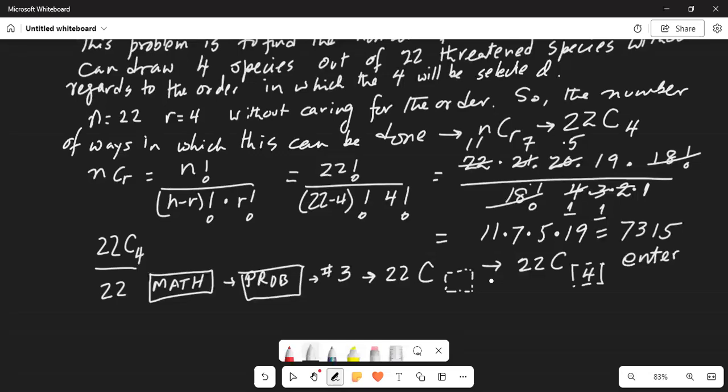Again C combination when ordering is not important. So 22 C 4 and hit enter and the answer is identical to what we have obtained before. So this is your answer.